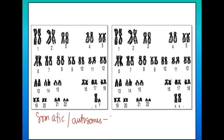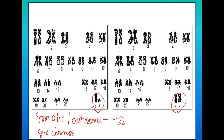The 23rd pair — the one I'm circling using my pen — is known as your sex chromosomes. In other terms, they are called allosomes. So the 23rd pair is your sex chromosome pair.